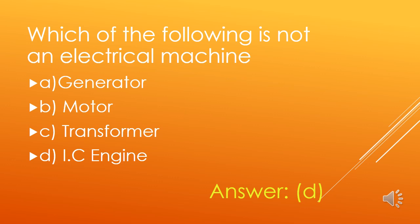Which of the following is not an electrical machine? A. Generator, B. Motor, C. Transformer, D. IC Engine. Generator, Motor, and Transformer are electrical devices. IC Engine is a mechanical device. So, option D is the right answer.